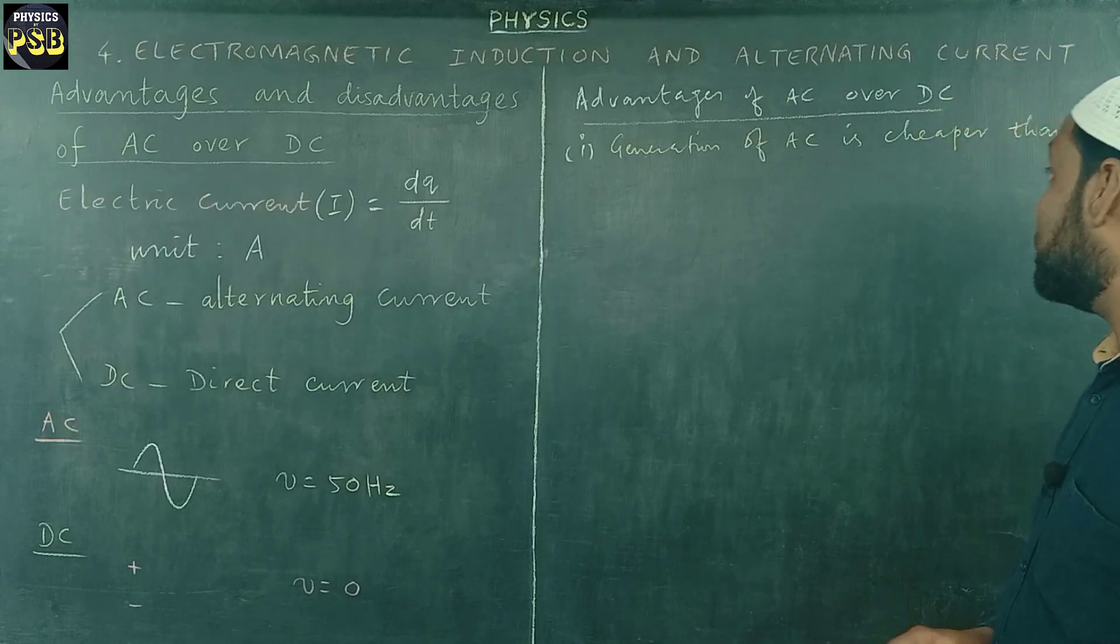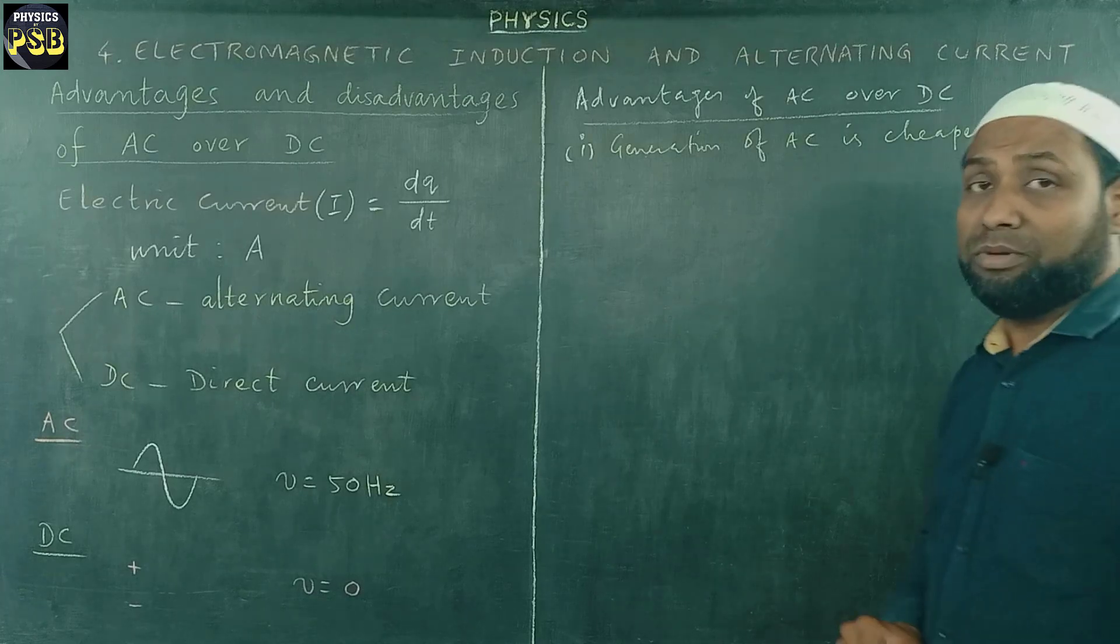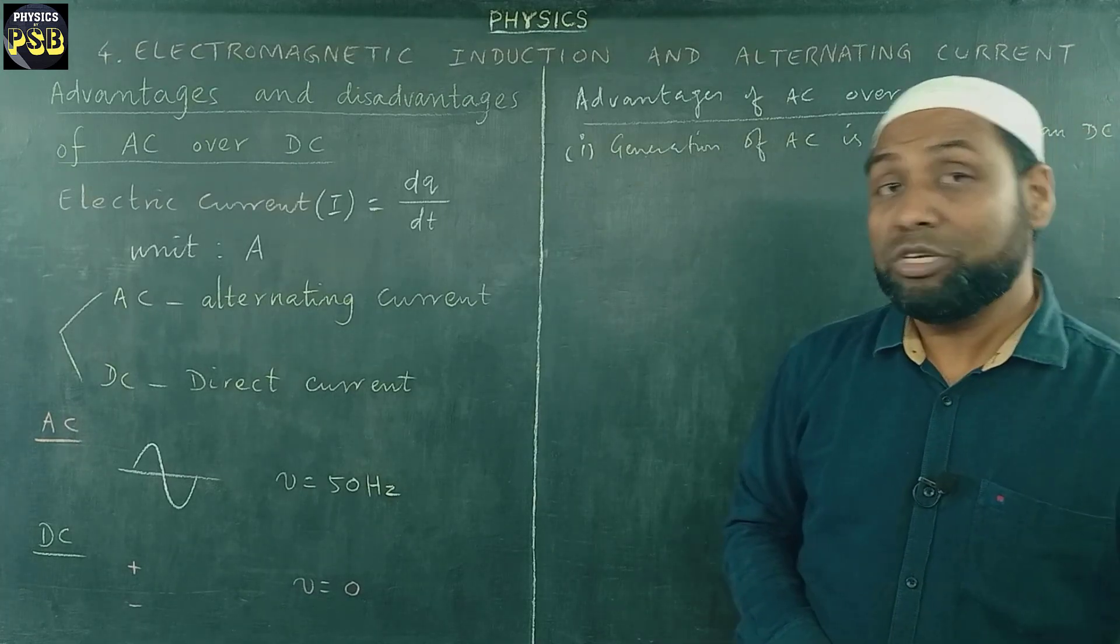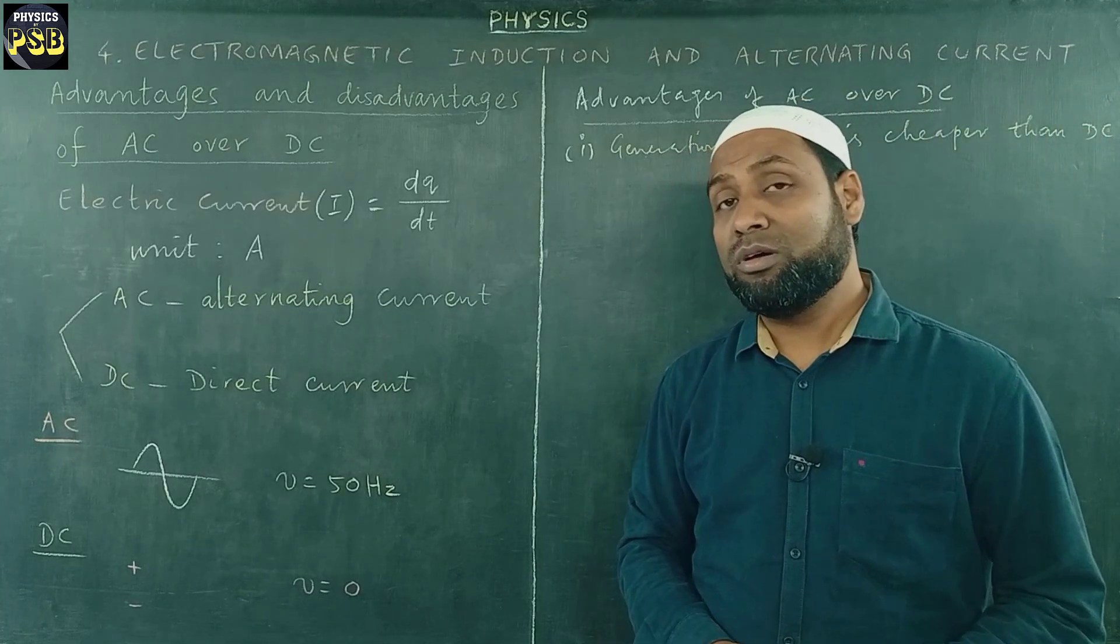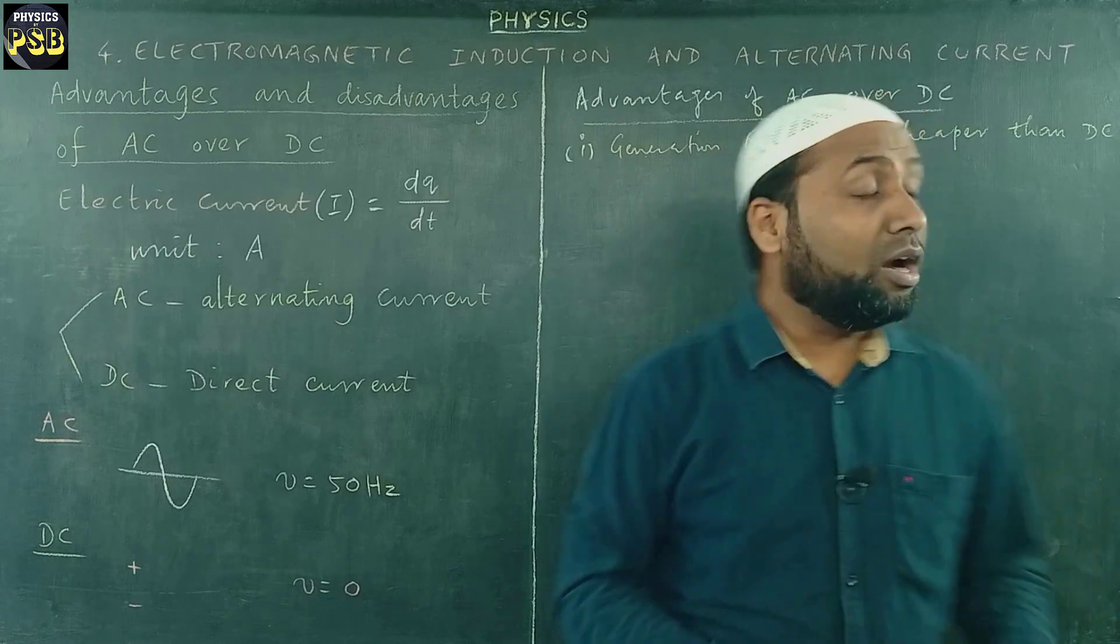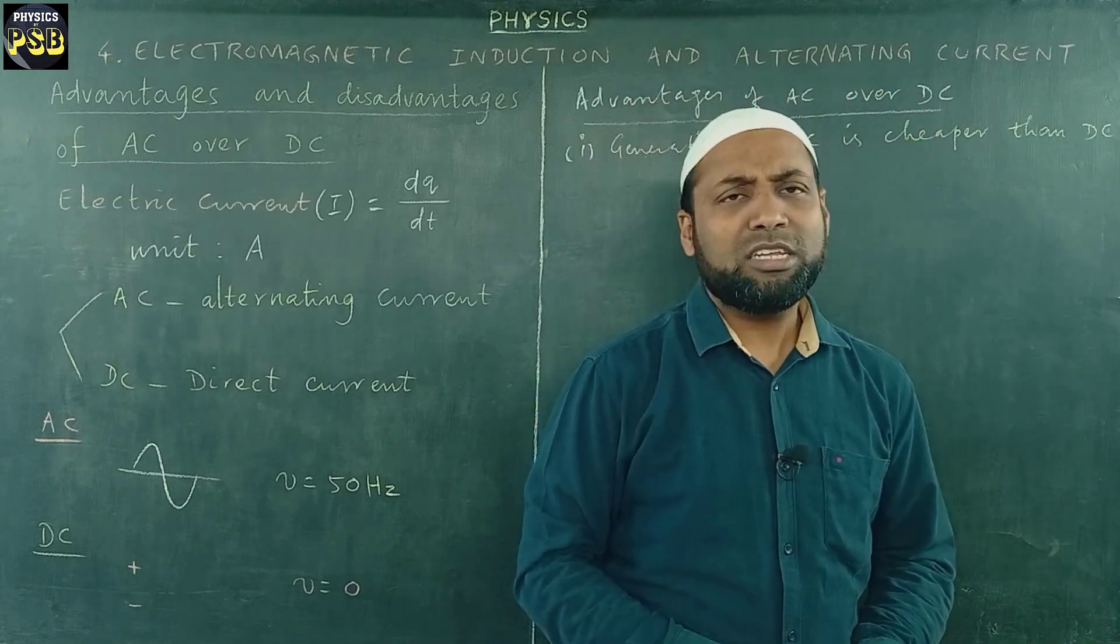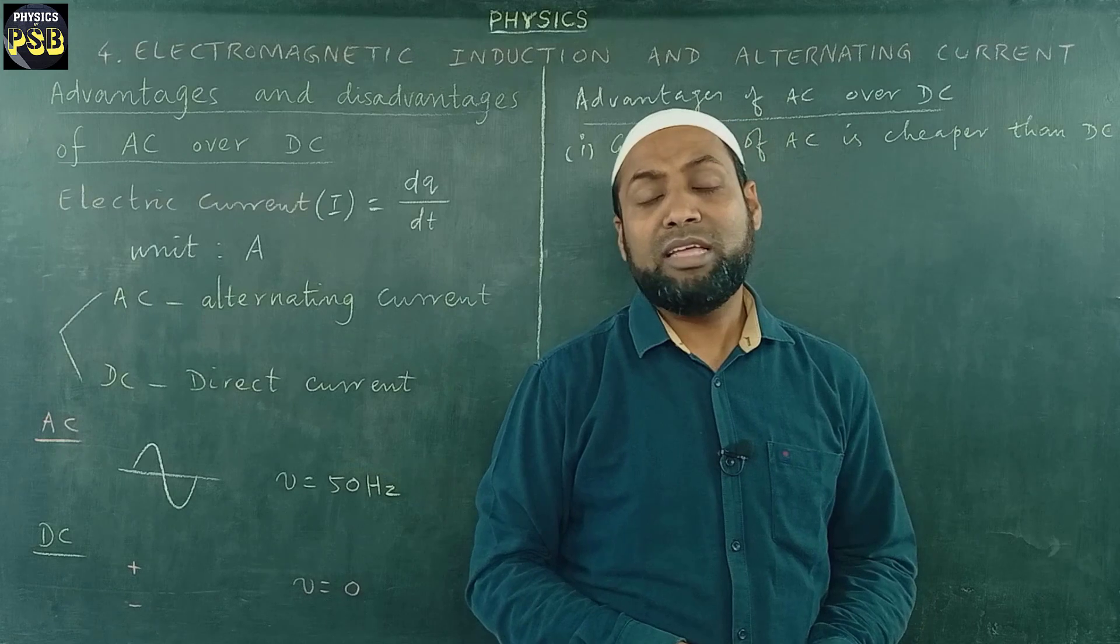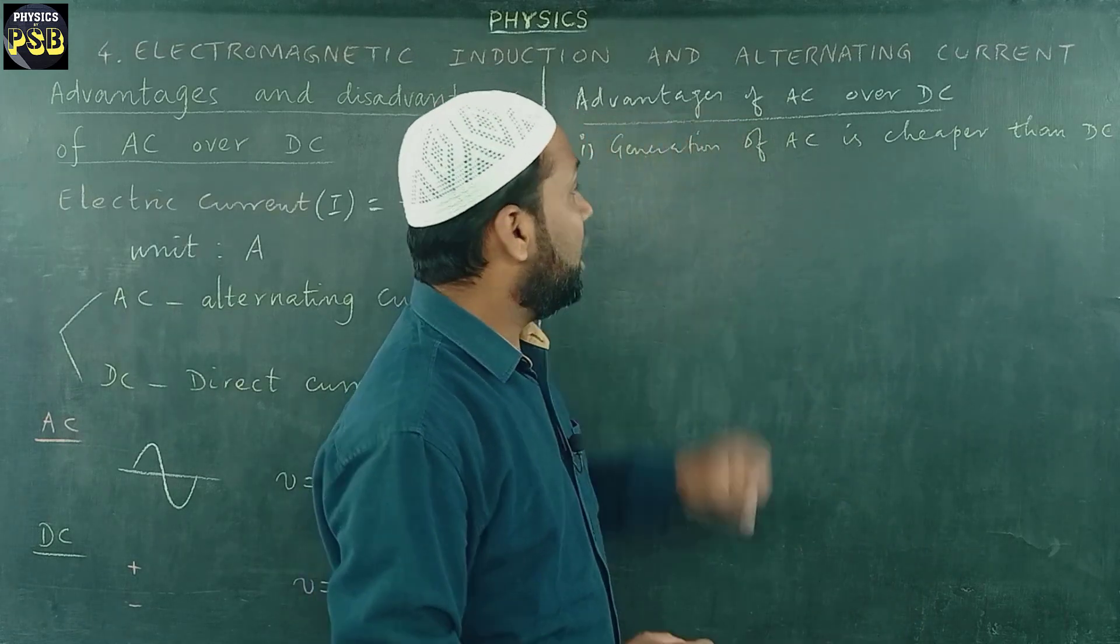The generation becomes very simple and cheaper, so it is chosen, it is always preferred over DC. Easily, with the help of AC alternator, one can generate alternating current.